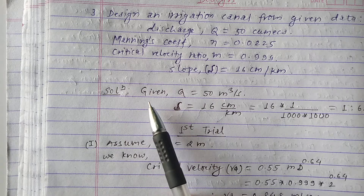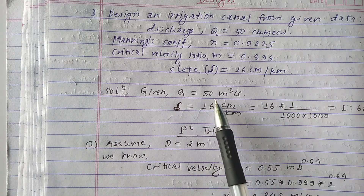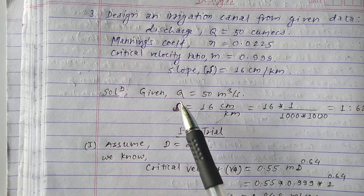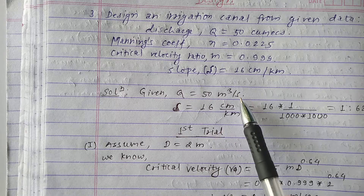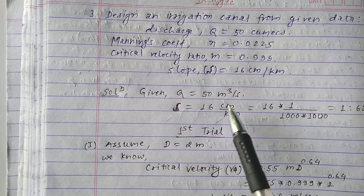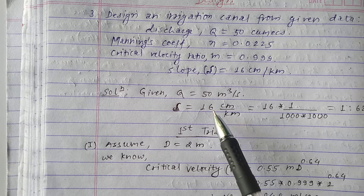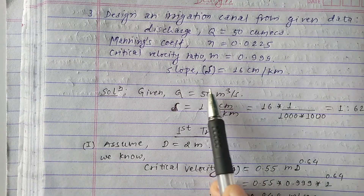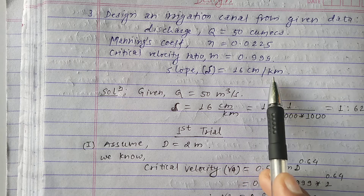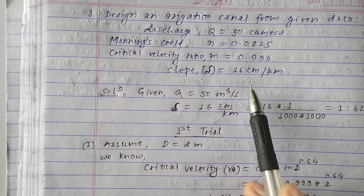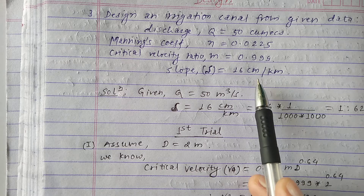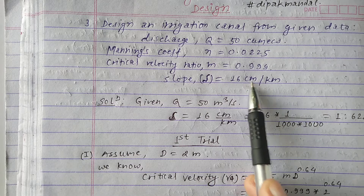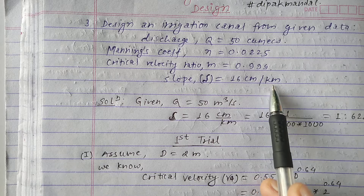The discharge Q_max is 50 m³/s. The slope is given in cm per kilometer, whereas in other problems it is generally given as a ratio. Since the units are different, we need to convert both into similar units — converting cm to meters and kilometers to meters.